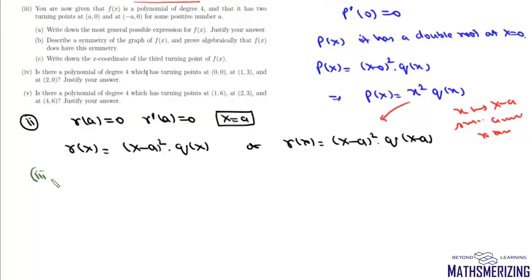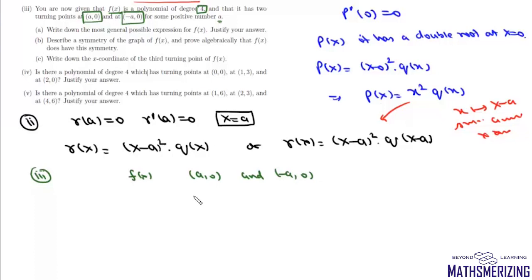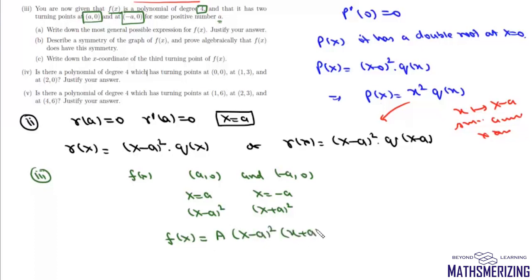In the third part, f(x) is a polynomial of degree 4 with two turning points at (a, 0) and (-a, 0) for some positive number a. This means f(x) has a double root at x = a and a double root at x = -a. So the most general expression is f(x) = A·(x - a)²·(x + a)², where A is a constant.